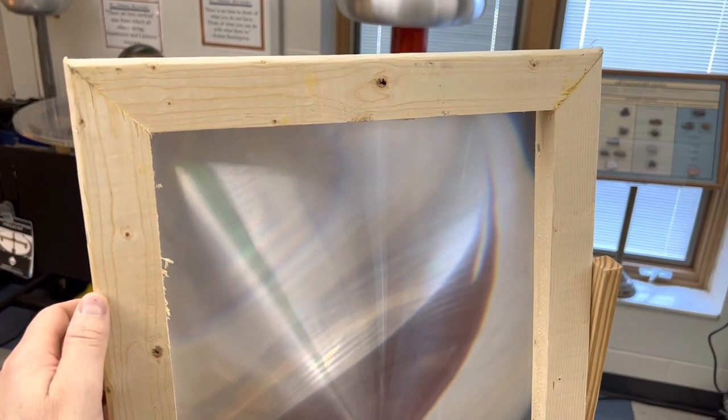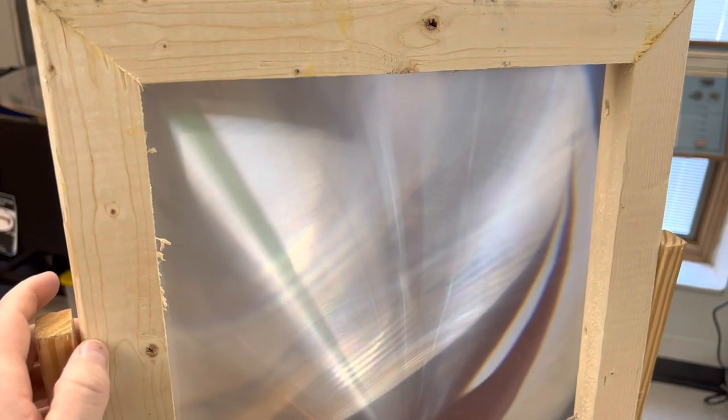The Fresnel lens was invented by Augustin Fresnel. He was a French physicist in the 19th century.